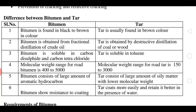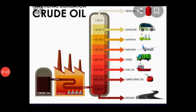Here we can see the process. On the left side, crude oil is passed through the furnace through pipes, is heated, and we get bitumen at the bottom, which has the highest boiling point — more than 350 degrees Celsius. Above that we get lubricating oils, fuel oil for ships, diesel, paraffin, and so on through fractional distillation of crude oil.